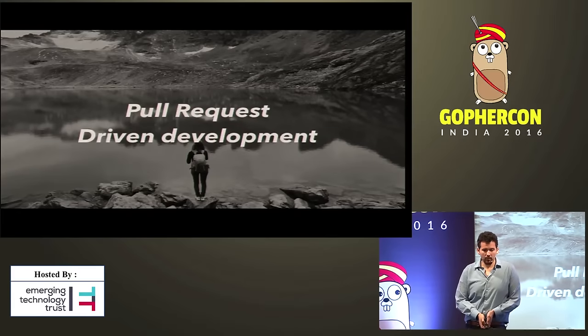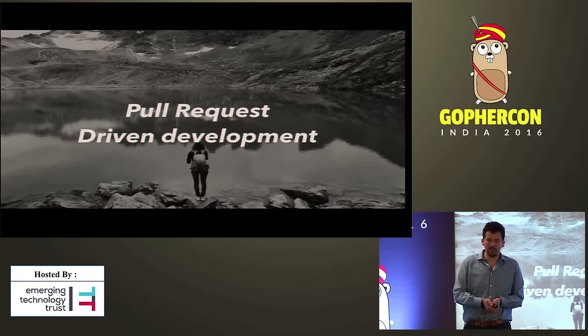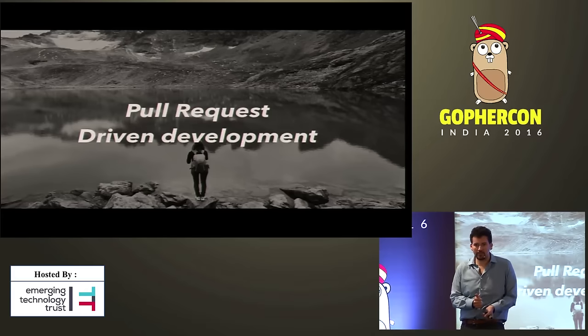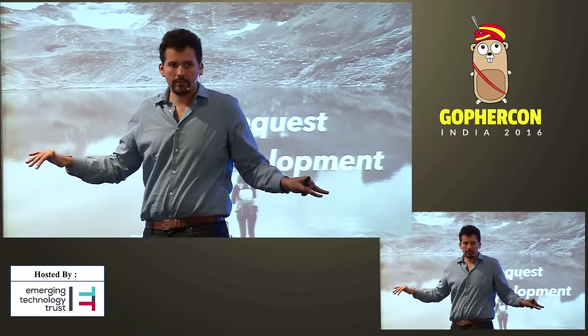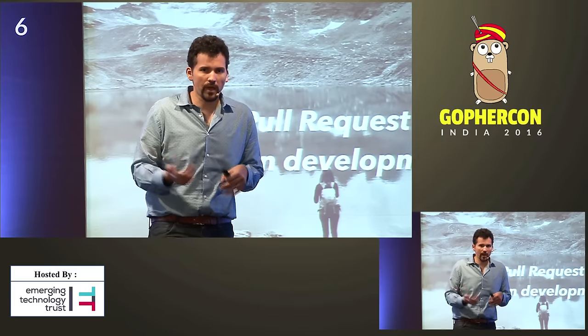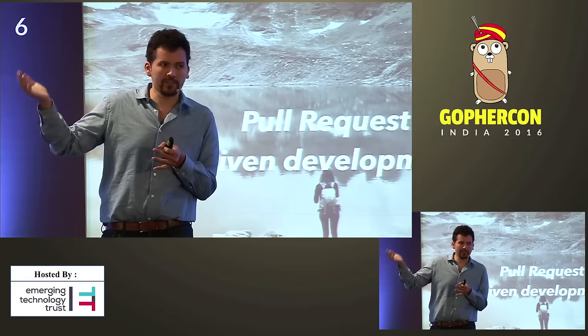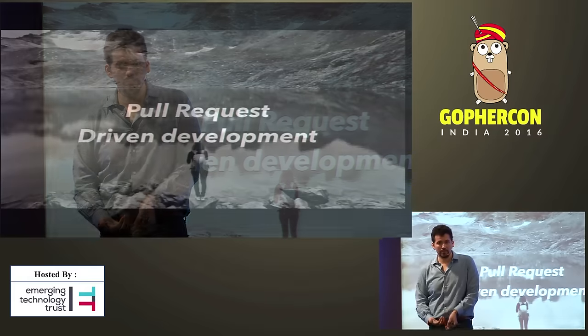One of our core tenets: on my team we deploy three or four times a day across our different microservices. The only way we do this is with a style called pull request driven development. Instead of having development, staging, and production branches with flows between environments, we just have pull requests and master — that's it. We have build bots that enforce other people reviewing every single pull request. This keeps quality high in master, so we can deploy more often, meaning fewer bugs in each release.